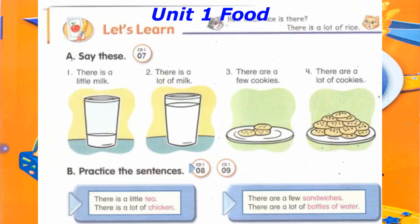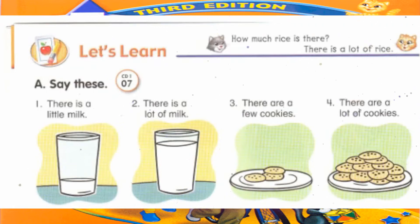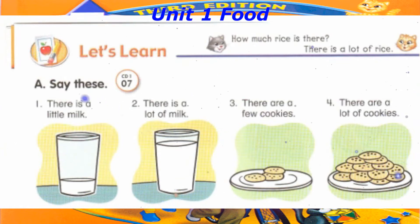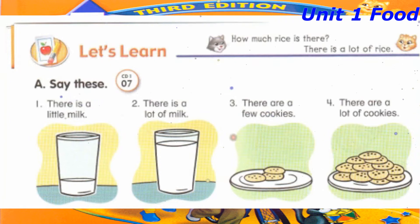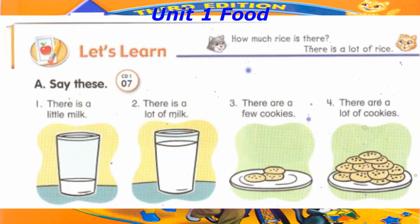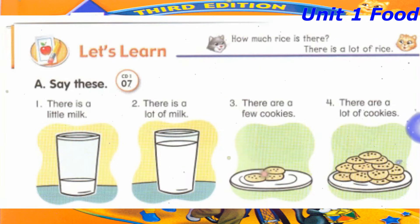Track 7. Let's learn. A. Say these. Number 1: there is a little milk. Number 2: there is a lot of milk. Number 3: there are a few cookies. Number 4: there are a lot of cookies.